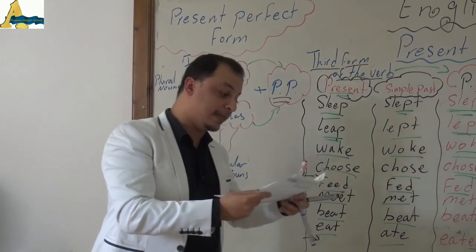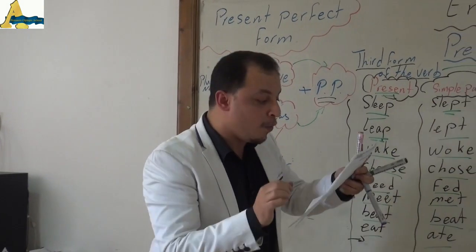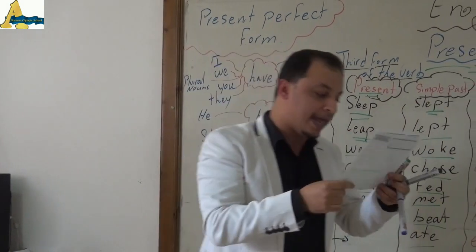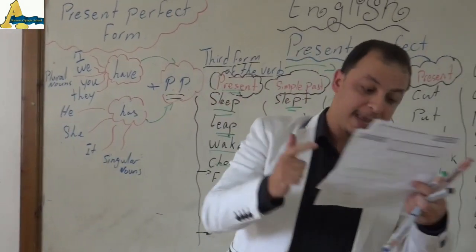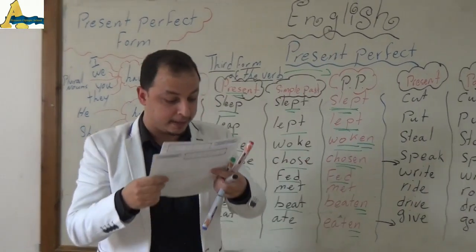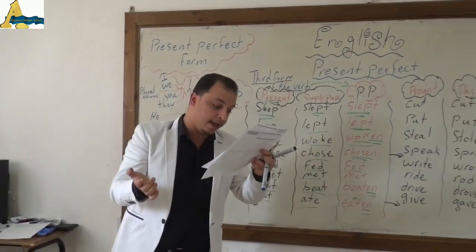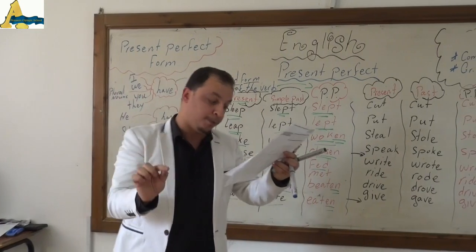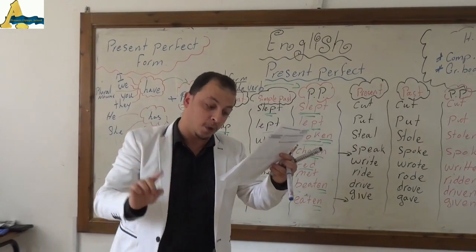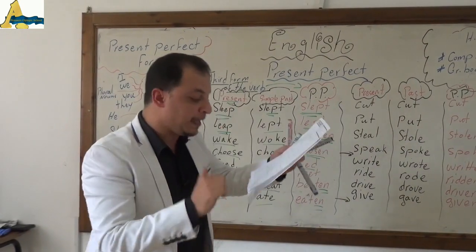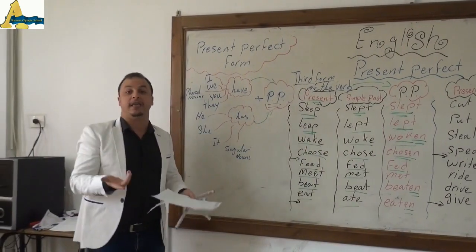This is a good way to memorize: sleep, slept, slept. Leap, leapt, leapt. Wake, woke, woken. Choose, chose, chosen. Feel, felt, felt. Meet, met, met. Beat, beat, beaten. Eat, ate, eaten. Cut, cut, cut. Put, put, put. Sit, sat, sat. Steal, stole, stolen. Speak, spoke, spoken. This is a really musical way to save them.